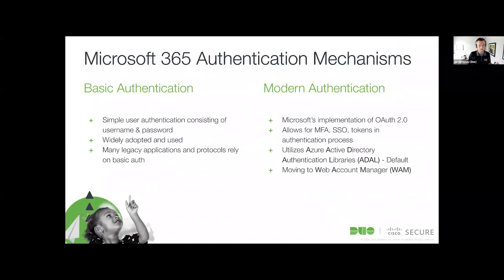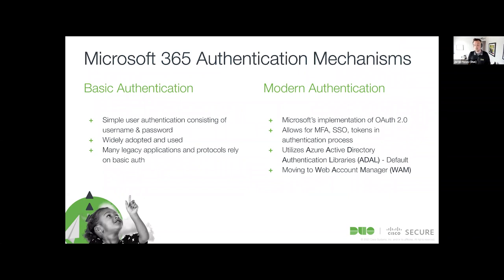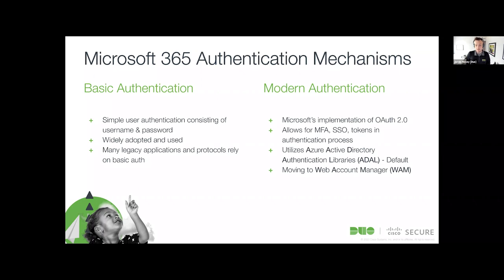Let's get into basic versus modern authentication within Office 365. Basic authentication is just that - it's the most simple form you can think of: username, password, I'm in. This is how most applications still behave, how email has behaved forever. Over the previous six or seven years, we've introduced modern authentication, which is really just Microsoft's implementation of OAuth 2.0 libraries - their marketing term around modern protocols that allow support for MFA, SSO, and session tokens.